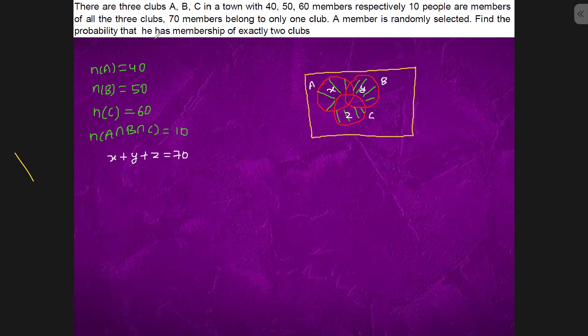To find the probability that he has membership of exactly two clubs. So what we have to find, we have to find this area, this area, this area and this area. You have to find only this.